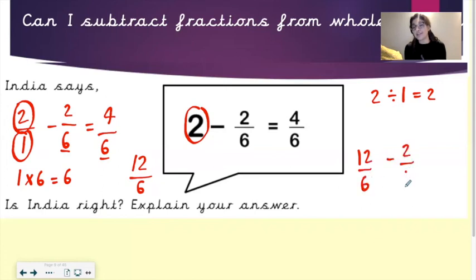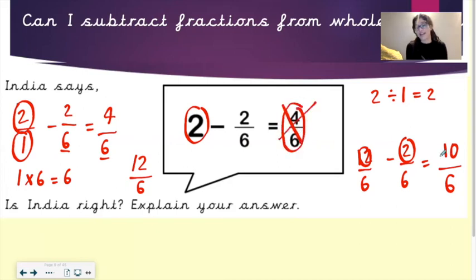So our new way of showing 2 is 12 over 6. And now because the denominators are the same, we can take fractions away because they have to have the same denominator, otherwise we can't subtract. So what's 12 sixths take away 2 sixths? Do 12 take away 2 first, remember the numerators? That's 10, and the denominator does not change. And that's 6. So actually India is wrong. The answer is not 4 sixths, as she said. The answer is actually 10 sixths.